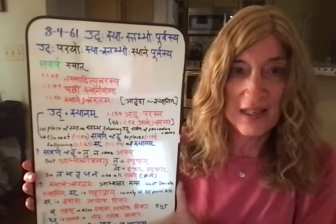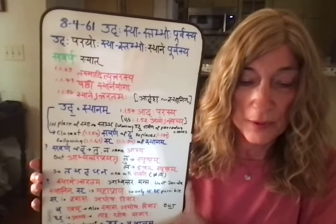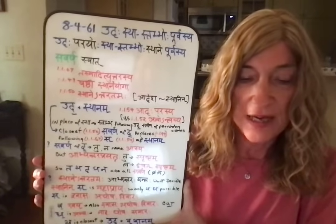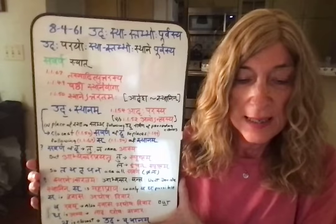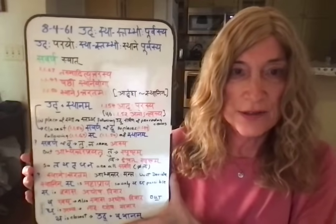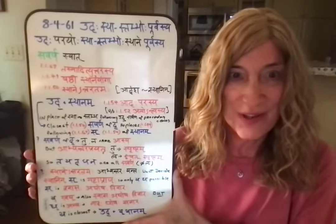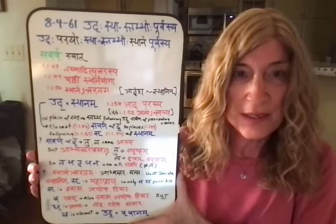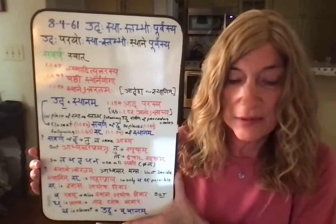Udāha is caturthī, or ablative of ud. Parayoḥ and stastambhoḥ are in the ṣaṣṭhī, and because of that we understand that the word sthāne is understood to be there. When an item in the grammar is used in the fourth case (caturthī/ablative) without some specific ablative function, we understand it is related to something that follows it. The sutra that enjoins that is tasmādityuttarasya.